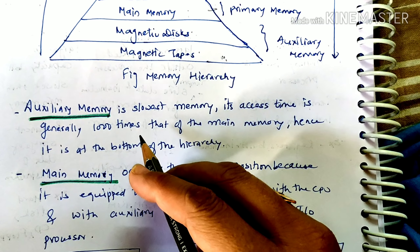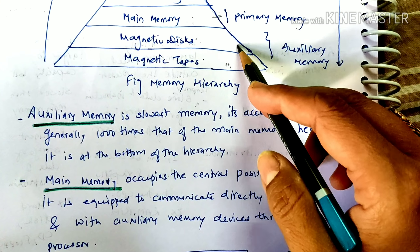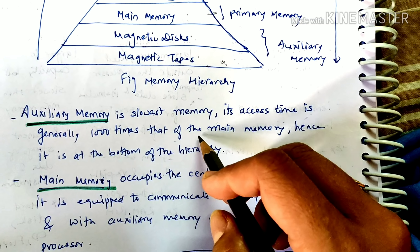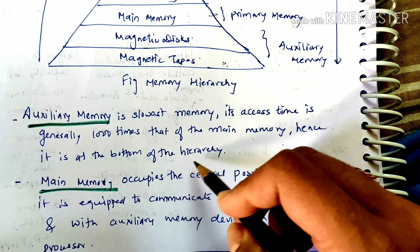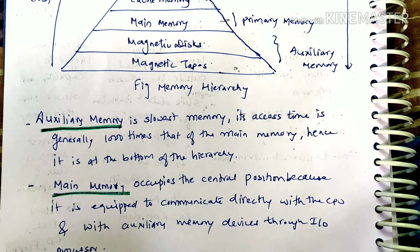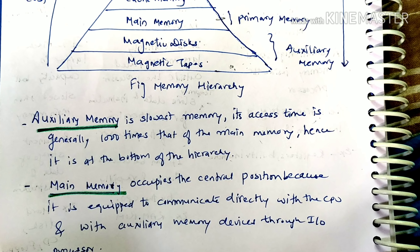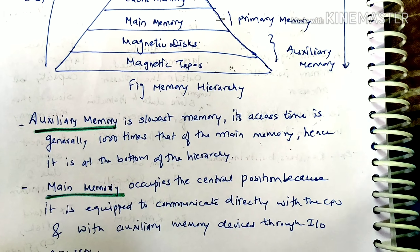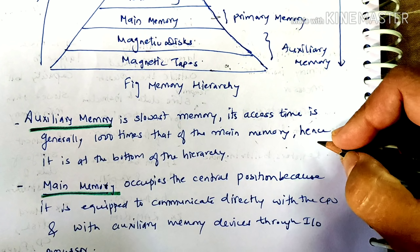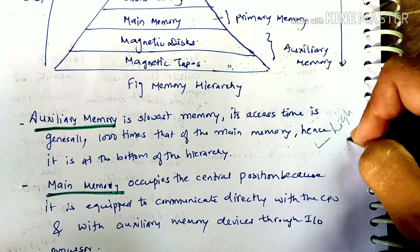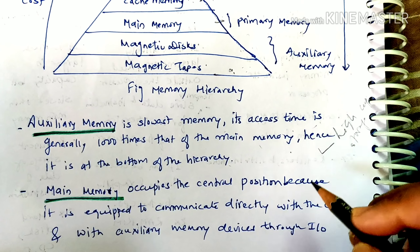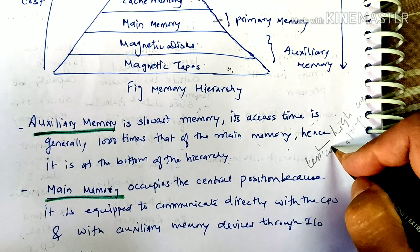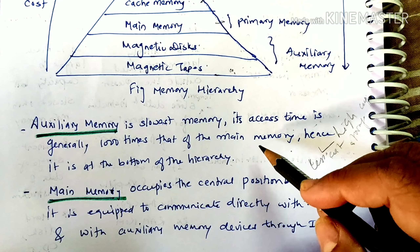Auxiliary memory — magnetic disks and magnetic tapes — is the slowest memory. Its access time is generally a thousand times more than that of main memory, so it is at the bottom of the hierarchy. However, its storage capacity is very high, and its cost is lower than the memories above it in the hierarchy.